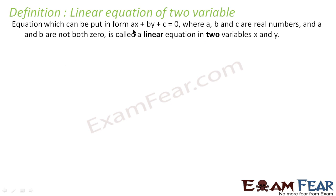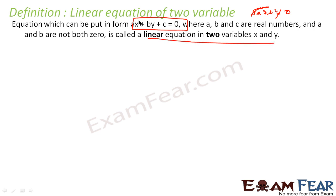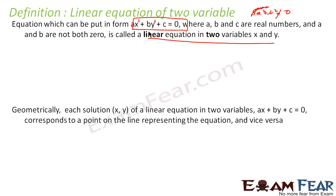A linear equation in two variables is any equation that can be put in the form ax plus by plus c is equal to zero, where a, b, c are real numbers and a and b cannot both be zero together — meaning a squared plus b squared is not equal to zero. It is called a linear equation in two variables because the maximum power is one and there are exactly two variables.